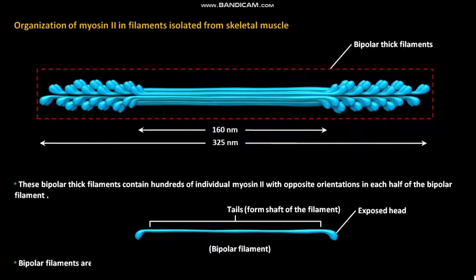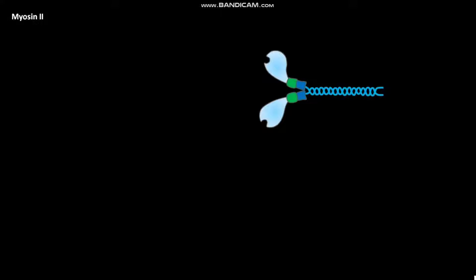Bipolar filaments are extracted with high salt and ATP. As a result, the bipolar filament disassembles into individual myosin-2 molecules.